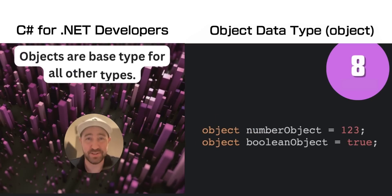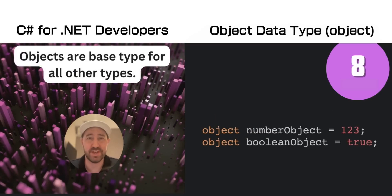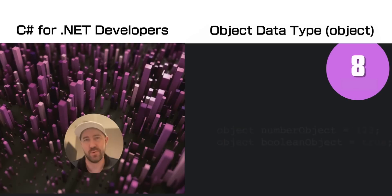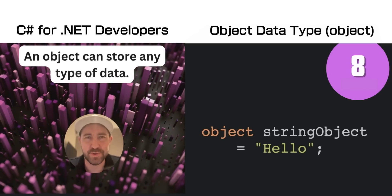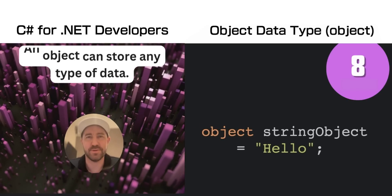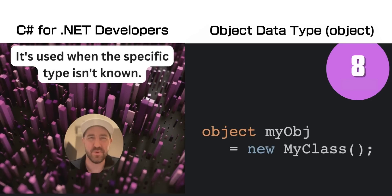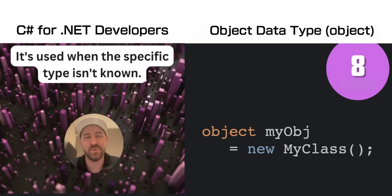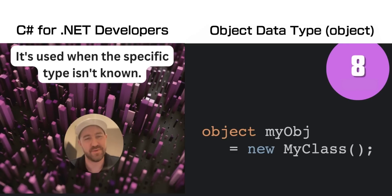The object data type can represent any data type, as it is the base type for all objects. You shouldn't really do this, but an object data type can store any type of object. The only time you should use it is when you don't know what type of object is going to be in that variable.